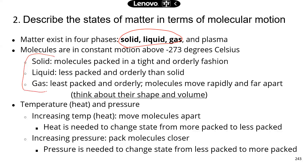When you look at the three different states in terms of molecular motion: in a solid, molecules are packed in a very tight and orderly fashion, so they have limited movement compared to liquid and gas. Liquid and gas are less packed and less orderly, so molecules move more rapidly and can be further apart. In the gas state, molecules are furthest from each other.